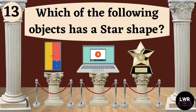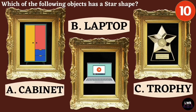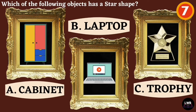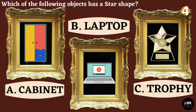Question number thirteen. Which of the following objects has a star shape? Letter A, cabinet. Letter B, laptop. Or letter C, trophy.